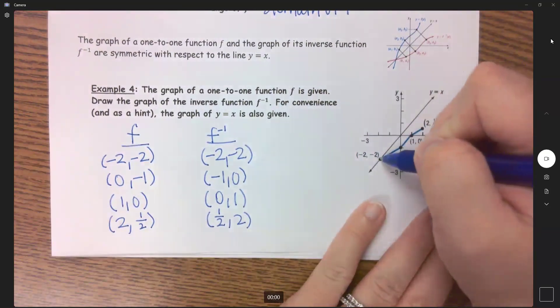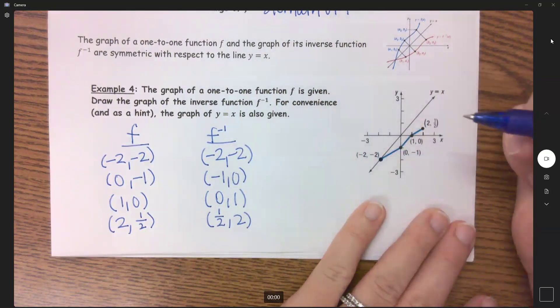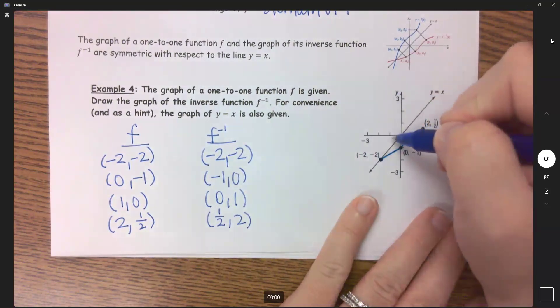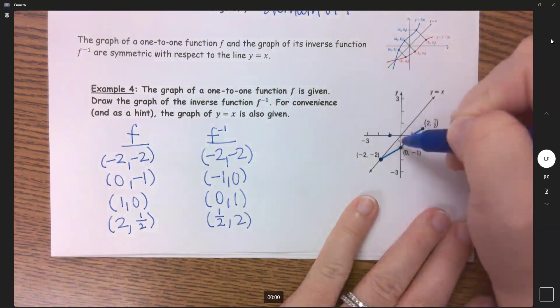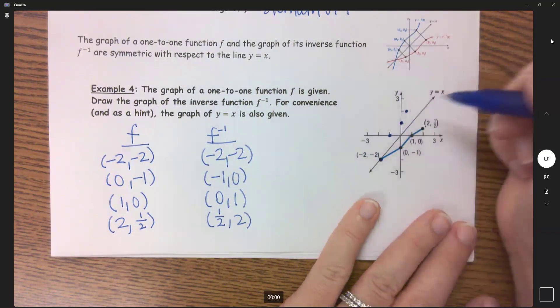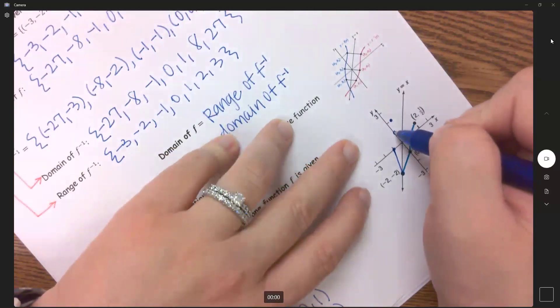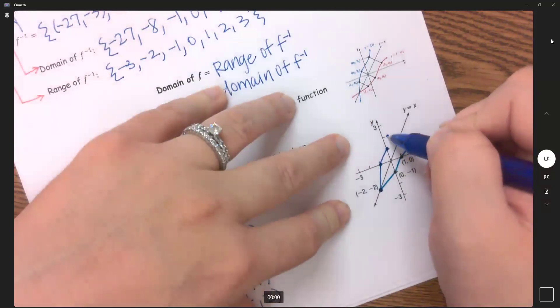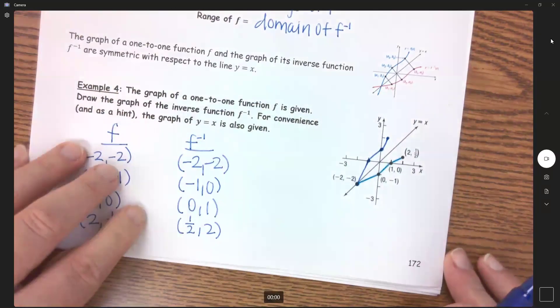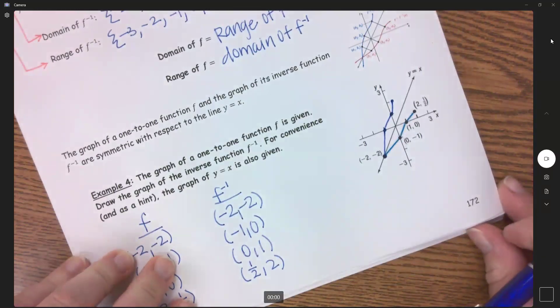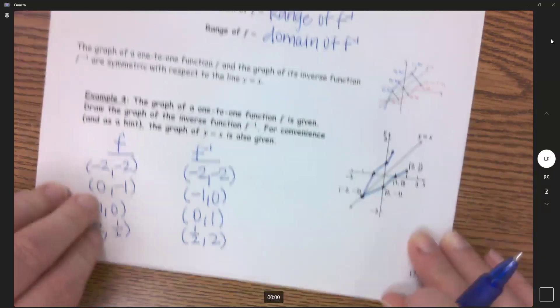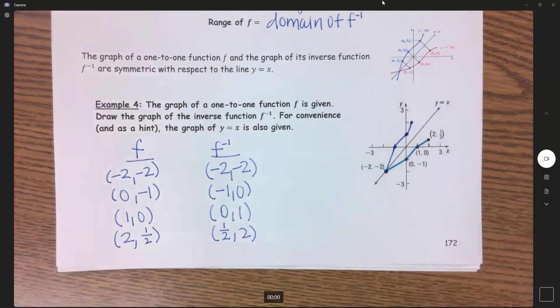So let's plot those. This one is right there on top of each other and we have negative 1, 0, 0, 1 and 1 half, 2. And if we draw those as best as we can, that should look pretty darn symmetrical right there.